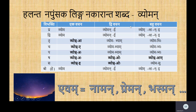This Vyoman Shabda is present in both Ullinga as well as Napumsaka Linga. In the Napumsaka Linga it goes like this: Vyomna, Vyomabhyam, Vyomabhihi — Vyomne, Vyomabhyam, Vyomabhyaha — Vyomna, Vyomabhyam, Vyomabhyaha — Vyomna, Vyomno, Vyomnaam — Vyomni, Vyomno, Vyomasu — He Vyoma, He Vyomani, He Vyomani.